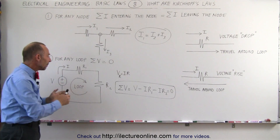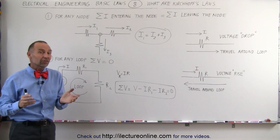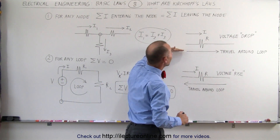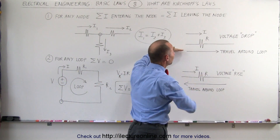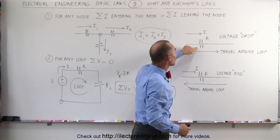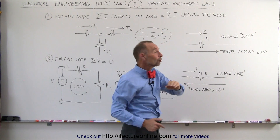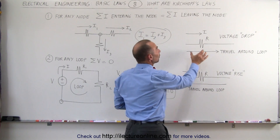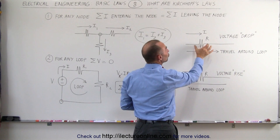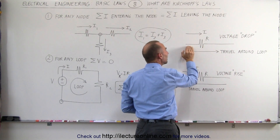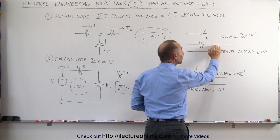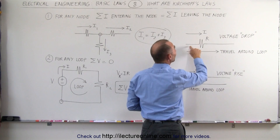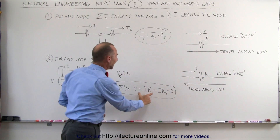To get a better feel for what happens across the resistor, it does depend on what direction you travel relative to the current. For example, let's say that we're traveling around the loop in this direction, from left to right across the resistor, which happens to be the same direction as the current flow in that particular branch. Therefore, we experience what we call a voltage drop. The voltage is higher on the left side compared to the right side of this branch, so when we travel around the loop in that direction, we have a voltage drop, and we call that a negative voltage.